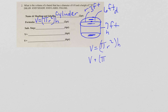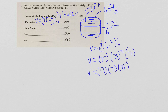Now I'm ready to work with my formula. V equals pi times 3 squared times height of 7. My substitution step is V equals pi times 3 squared times 7.